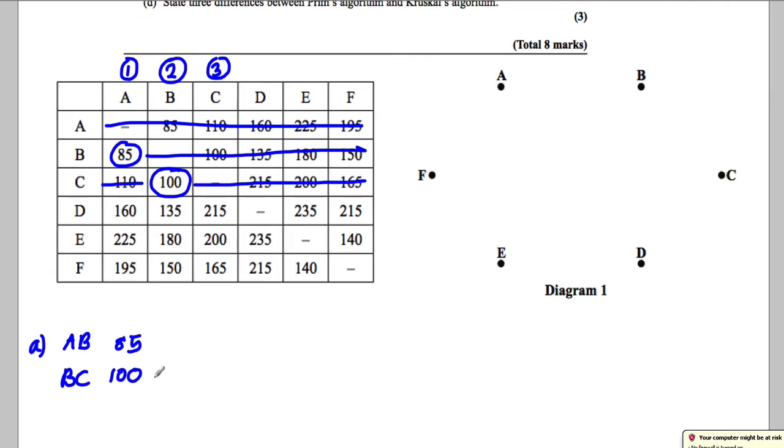So we call C number three as follows and we cross out everything in row C. Now we look down these three columns to find the smallest. The smallest out of all of these is the 135. So we circle the 135. It means that BD is next. So we write BD 135 is next.